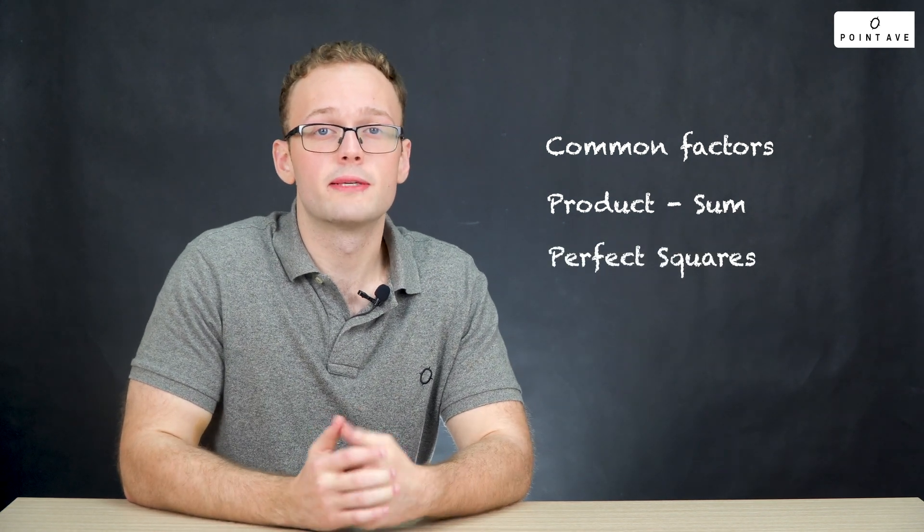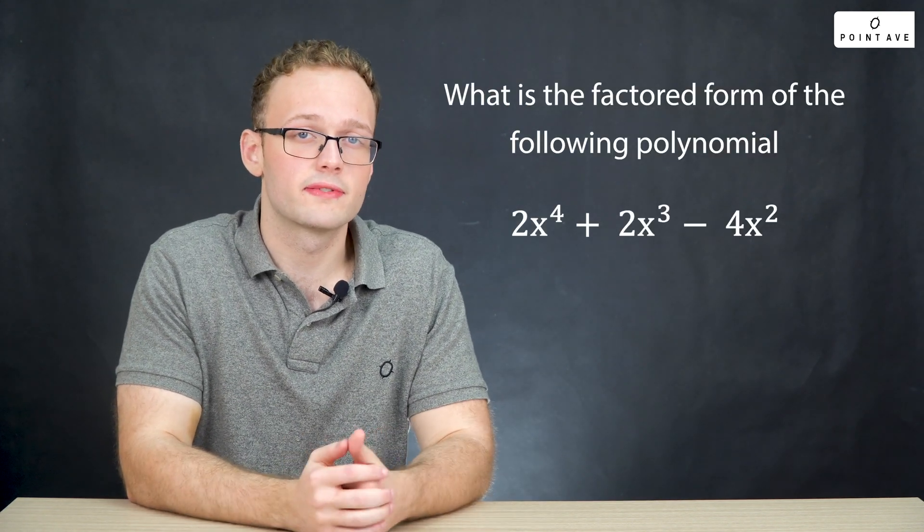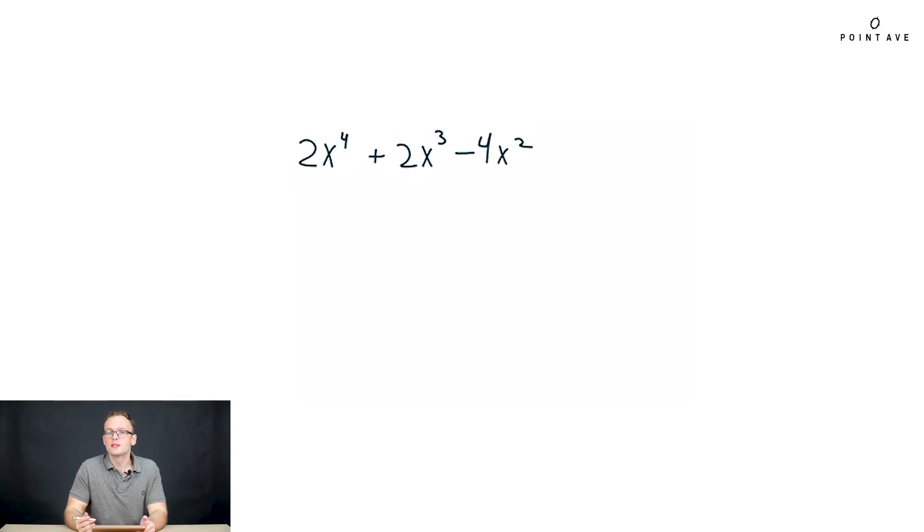Let's start with an example and see how we can apply these. This question asks us to simply factor the expression we have. First we always want to check for any common factors. Here we see that every term has a shared factor of 2x squared, so we can factor it from the full expression. What's left is x squared plus x minus 2.